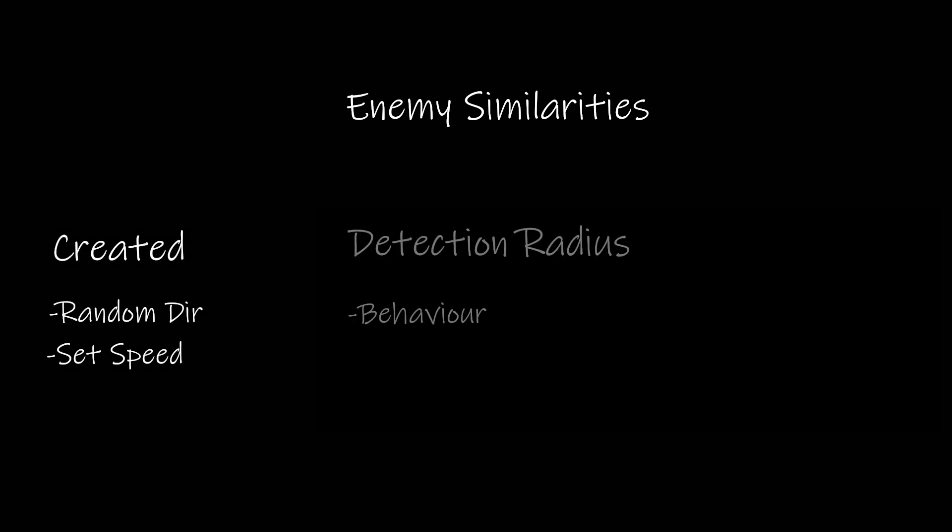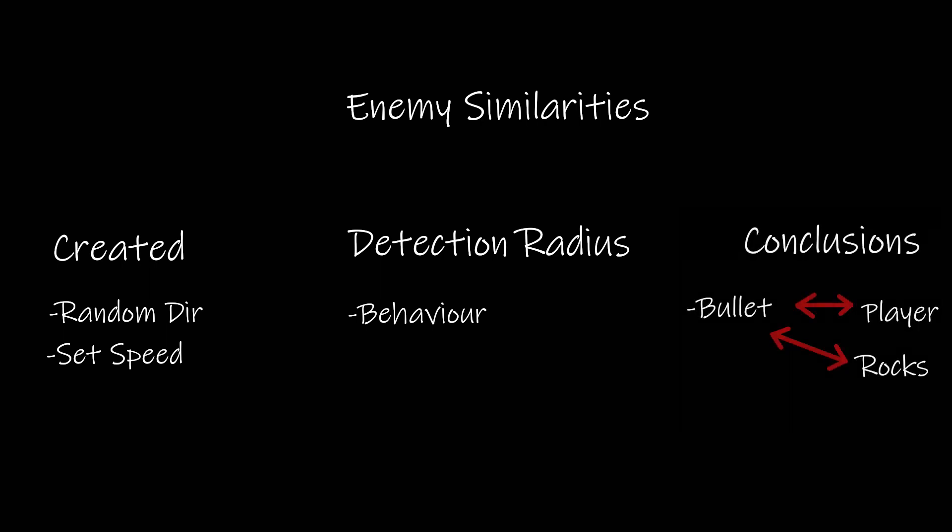So you can see there's a lot of similar properties to the ships but they do have their differences. So they're all going to have a direction and speed that they move at when they're first created. They all have a kind of detection radius. And finally where they're most similar is how they interact with the other objects. So if they create bullets those are going to harm the player. They're not going to harm each other. They can take damage from the player's bullets and they can also damage the player by running into them and destroying their ship.